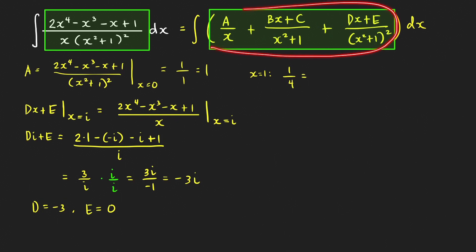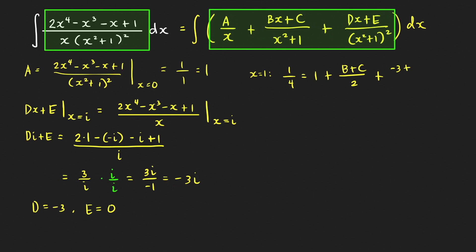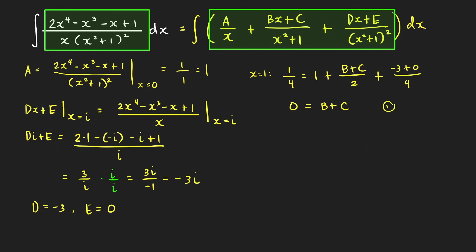Plugging x equals 1 into the partial fraction expression: the first term gives A over 1, which is 1. The second term gives B plus C all over 2. The third term gives D times 1 plus E over 4, which is negative 3 over 4. So 1 plus negative 3 fourths equals 1 fourth, giving B plus C all over 2 equals 0 — our first equation: B plus C equals 0.